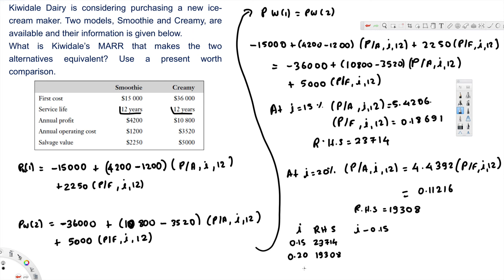These 20% and 15% values are close to $21,000 - that's why we look above and below. Now let's put it in the equation: (i minus 0.15) over (0.20 minus 0.15) equals (21,000 minus 23,714) divided by (19,308 minus 23,714).